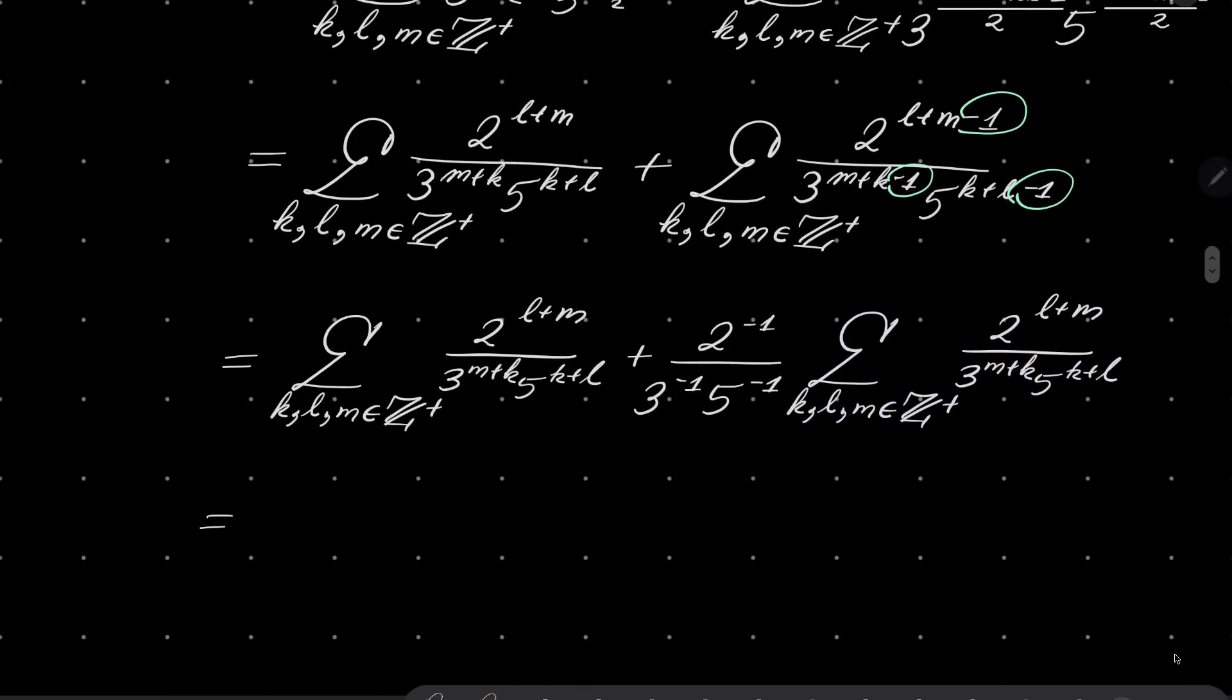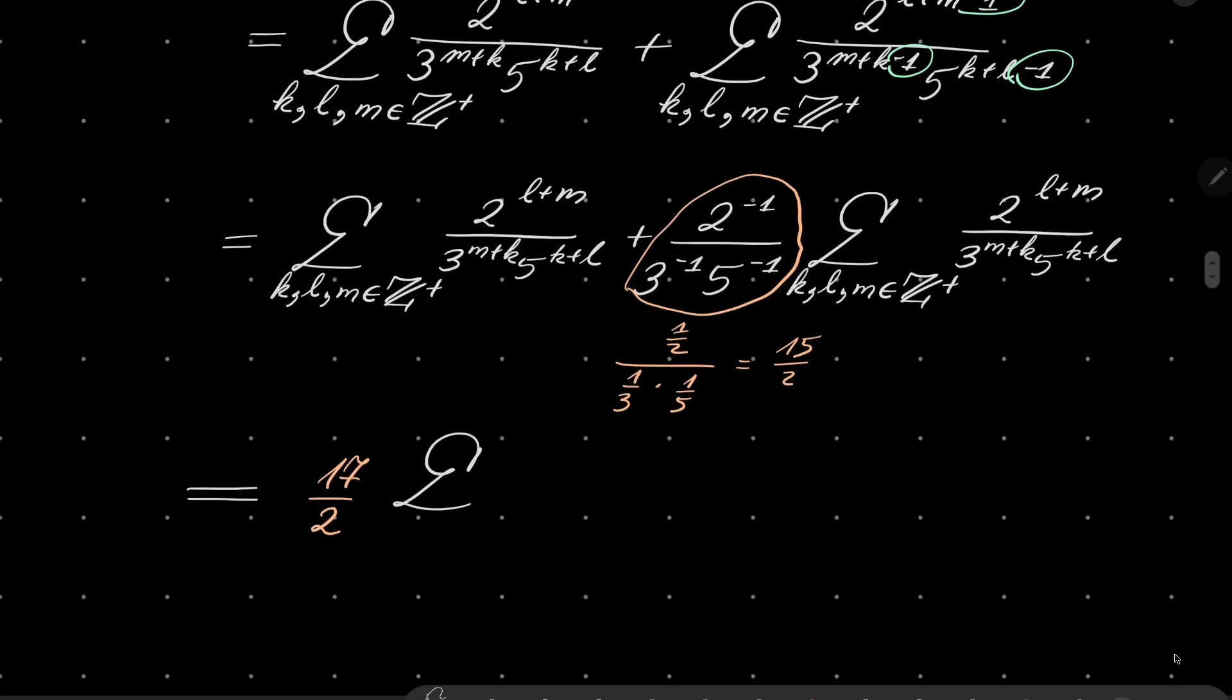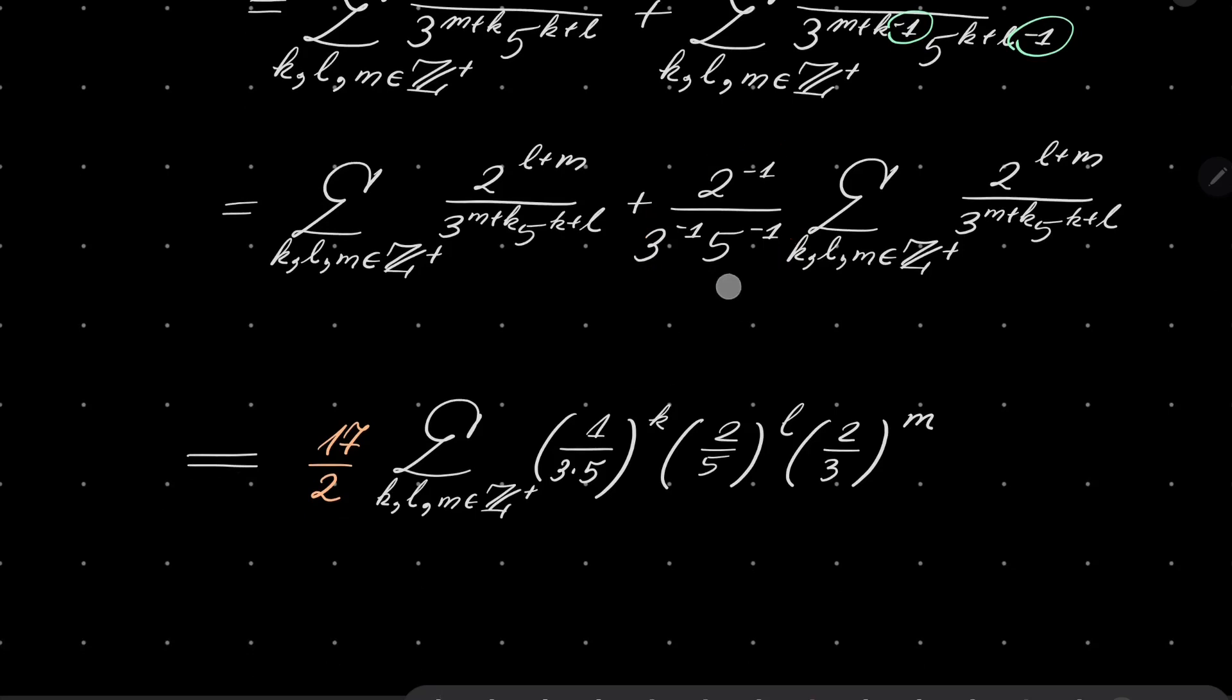So we have 2 to the power of (l+m), 3 to the power of (m+k), 5 to the power of (k+l), plus 2 to the power of -1, 3 to the power of -1, 5 to the power of -1 times the very same sum. Which is good news because now, let's take a look, what is this number right here? It's 1/2 times 1/3 times 1/5. So it's 1/30. And 1/30... wait, 15 over 2. 15 over 2 plus 1 is 17 over 2. We have 17 over 2 times our sum over k, l, m positive integers. And here we have 1/(3×5) to the power of k, 2/5 to the power of l, and 2/3 to the power of m.